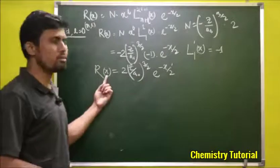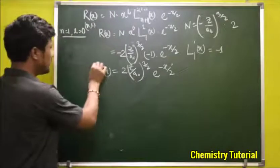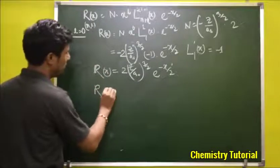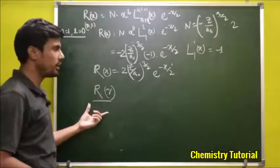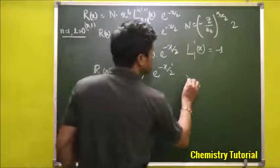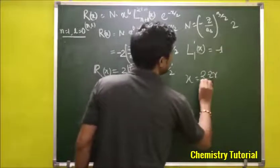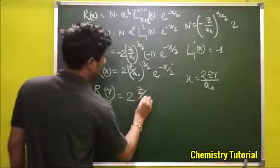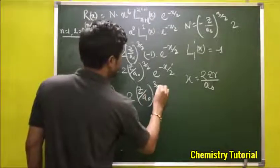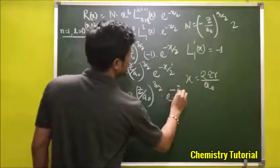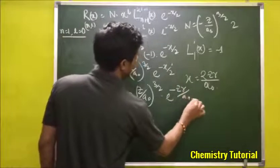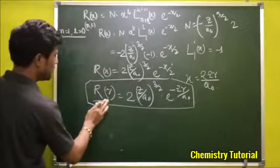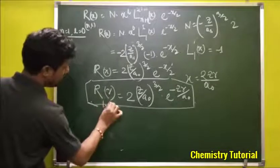Now we convert this radial wave function into a function of r. We substitute x = 2zr/a₀, giving R(r) = 2·(z/a₀)^(3/2) · e^(−zr/a₀). This is the radial wave function for n=1 and l=0.